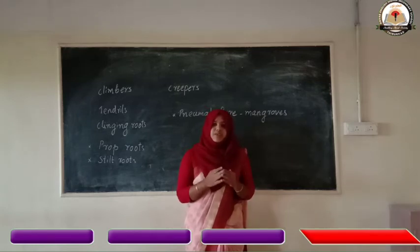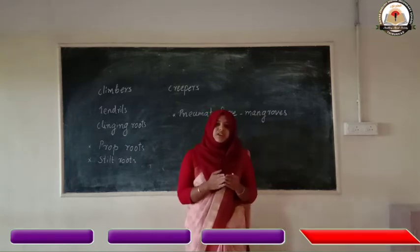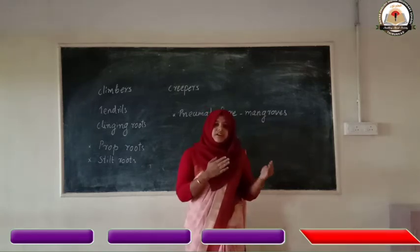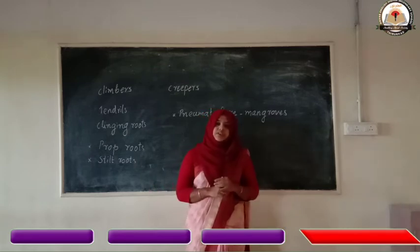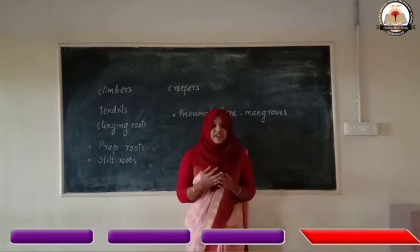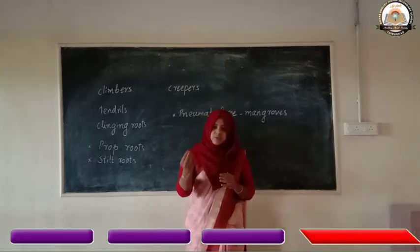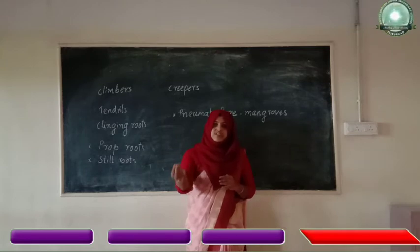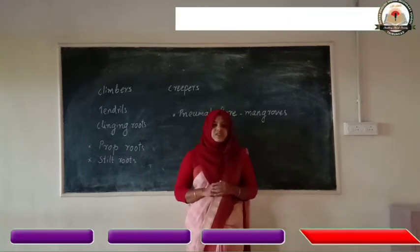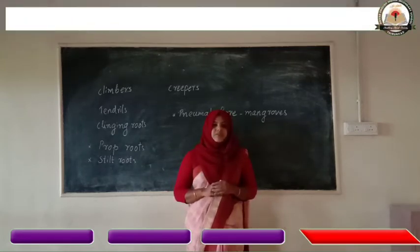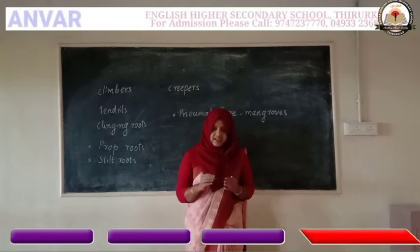How can we differentiate between underground stem and storage root? How can we identify a tuber as underground stem or storage root?